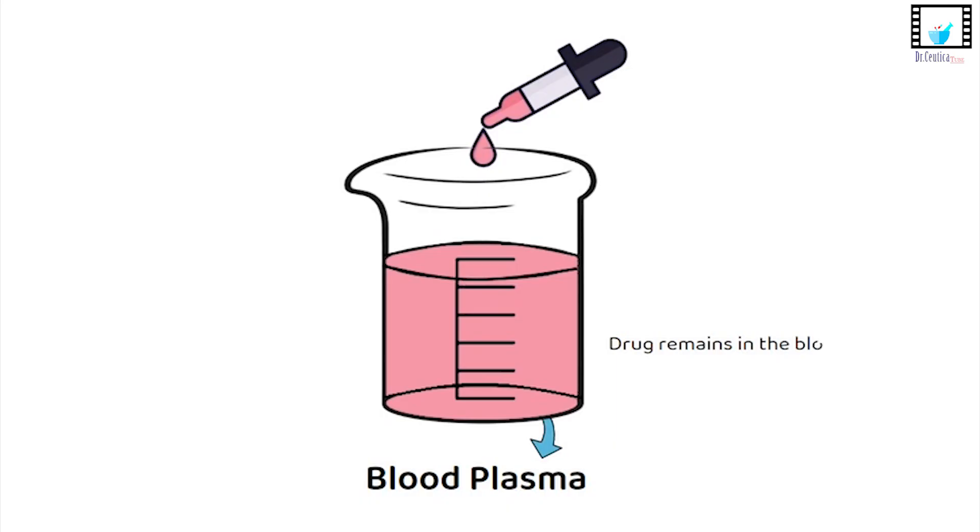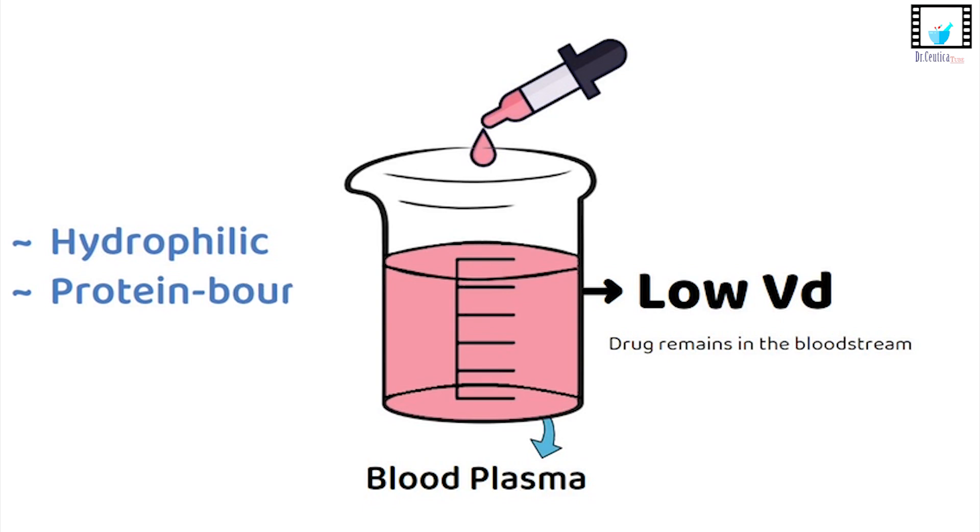If the dye stays in the water evenly dispersed that means the drug is staying mostly in the bloodstream. It doesn't enter tissues much. The result you will see a high concentration in the beaker or plasma. That's a low VD drug. These usually are hydrophilic or protein bound so they stay in the central compartment.